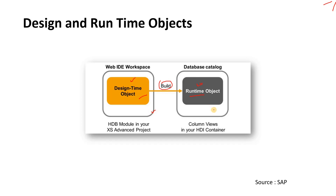Design time objects are used for moving across systems, while runtime objects are what you create and test. If you create a design time object but don't build it, you won't have a corresponding runtime object — for example, a table won't exist in your database. You can transport design time objects but not runtime objects. This lecture can be a bit confusing, but once you do all the hands-on exercises you can come back and understand everything in totality.